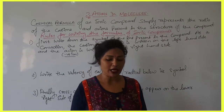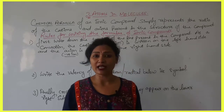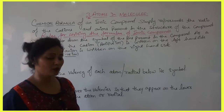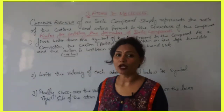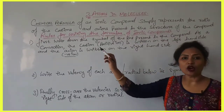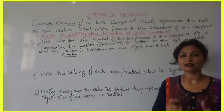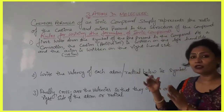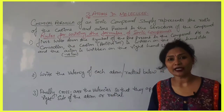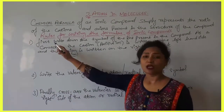Ionic compounds, as you know, contain positive and negative ions. The chemical formula of an ionic compound mainly represents the ratio of the cations and anions present in the structure of the compound.